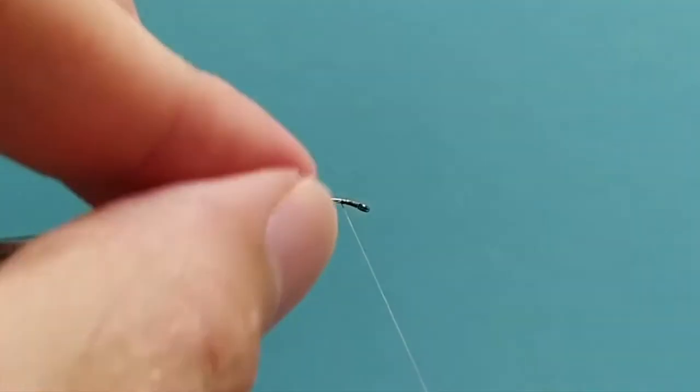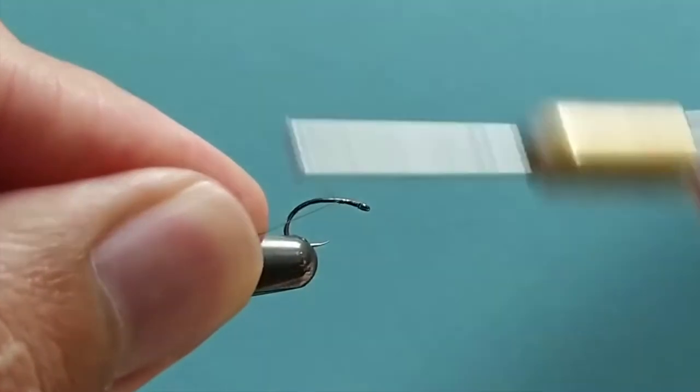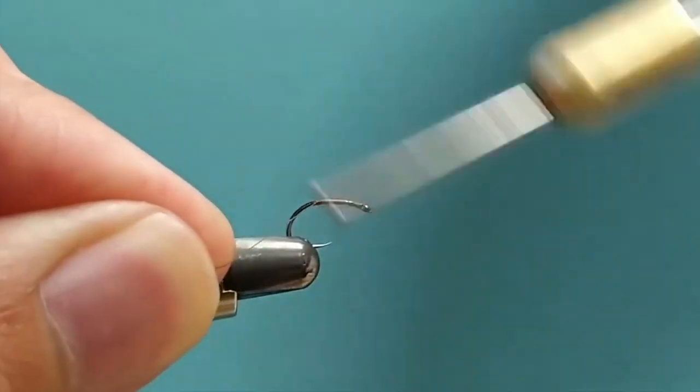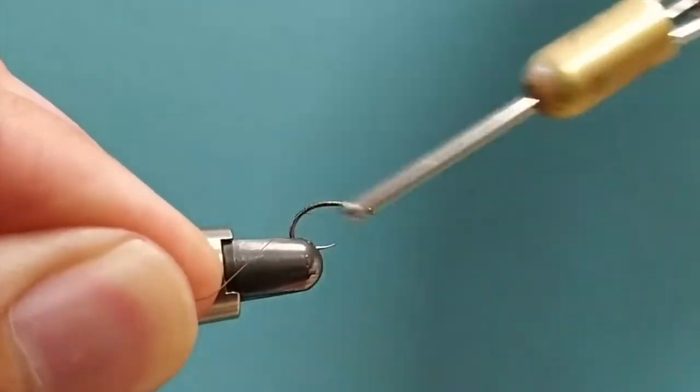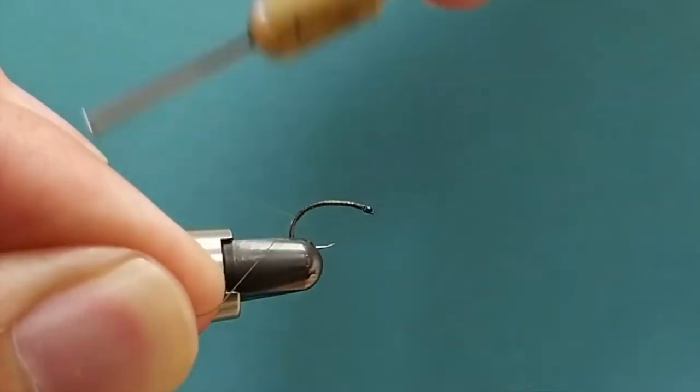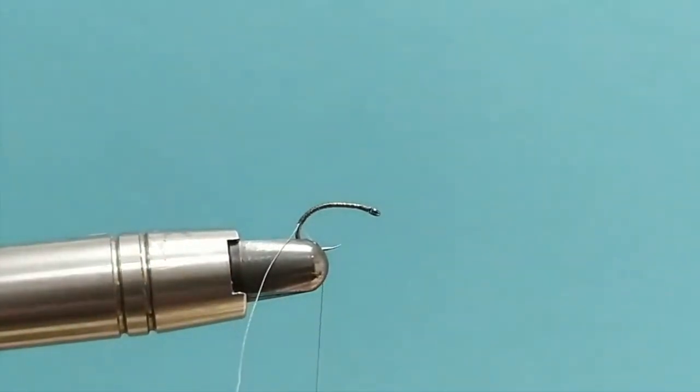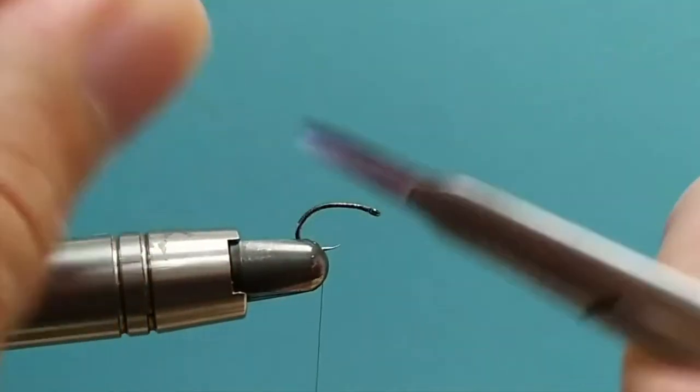We're going to go ahead and tie in the thread just behind the eye. Notice that I'm just pinching the thread between my fingers, holding it away from the hook and then winding up against that thread. That pushes the first base layer of thread one wrap up against the next, meaning I'm not leaving any of the hook exposed. Going quite a long way around the bend, wherever I want the body to finish.